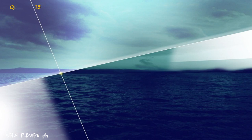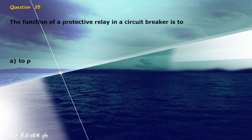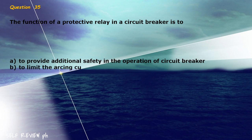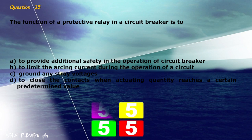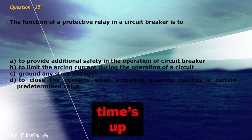Question 35: The function of a protective relay in a circuit breaker is to blank. A) provide additional safety in the operation of circuit breaker, B) limit the arcing current during the operation of a circuit, C) ground any stray voltages, D) close the contacts when actuating quantity reaches a certain predetermined value. The correct answer is letter D.